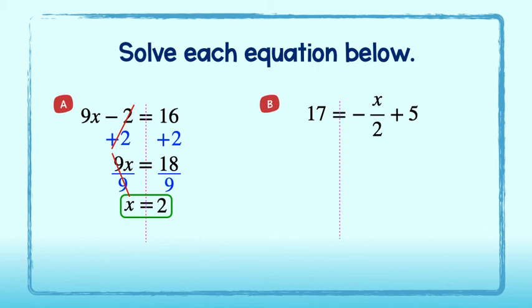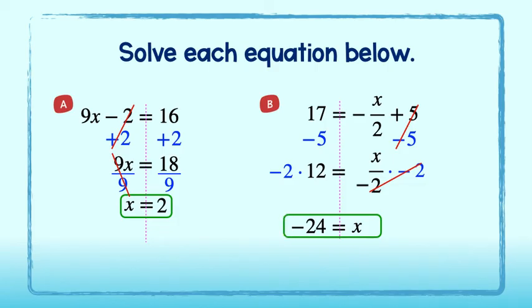In part b, the constant is 5. I will use the subtraction property of equality and subtract 5 from both sides of the equation, leaving me with 12 on the left and negative x over 2 on the right. And since the expression on the right is negative, I will have to take care of that, as x cannot be negative in our final answer. You'll see I brought down the negative and assigned it to the 2. Now it is easy for me to use the multiplication property of equality and multiply by negative 2 on both sides of the equation. Negative 2 times 12 is equal to negative 24 on the left. On the right, the negative 2s will reduce to 1, leaving me with just x on the right-hand side. I see that negative 24 is equal to x. Great!